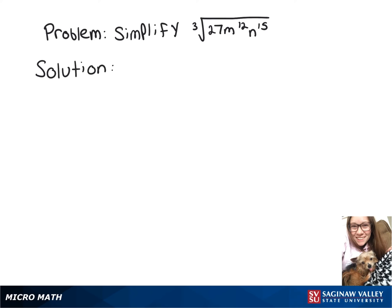We want to simplify the cube root of 27 times m to the 12th times n to the 15th. To do that, we're going to break up the things that we have under the cube root.